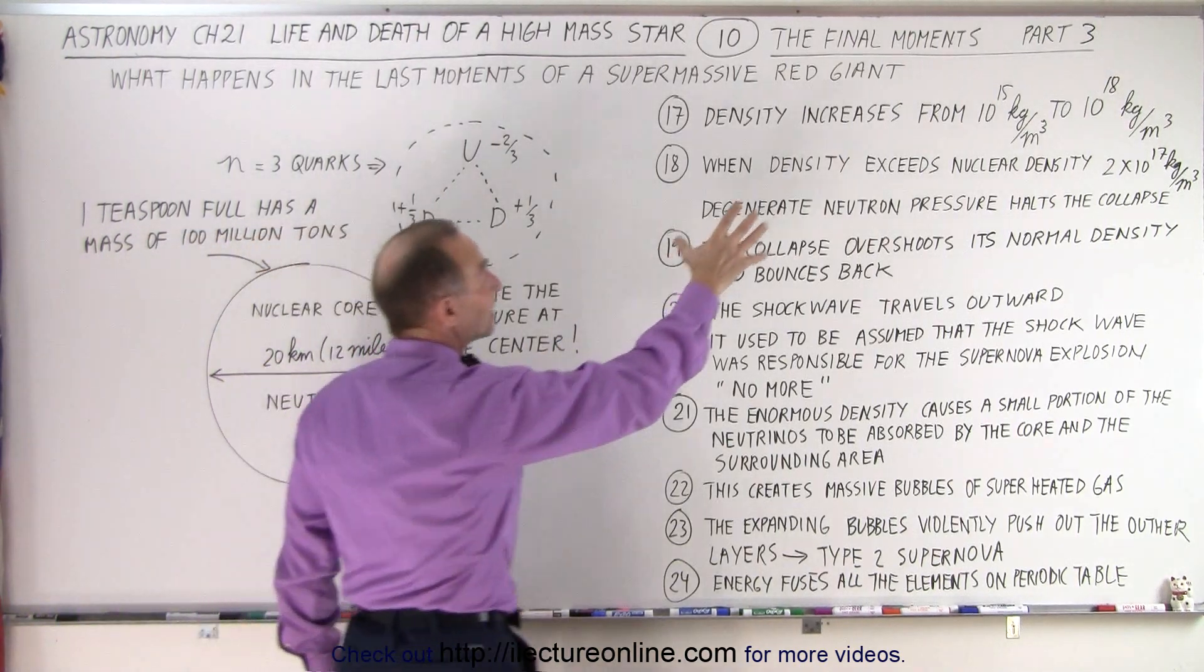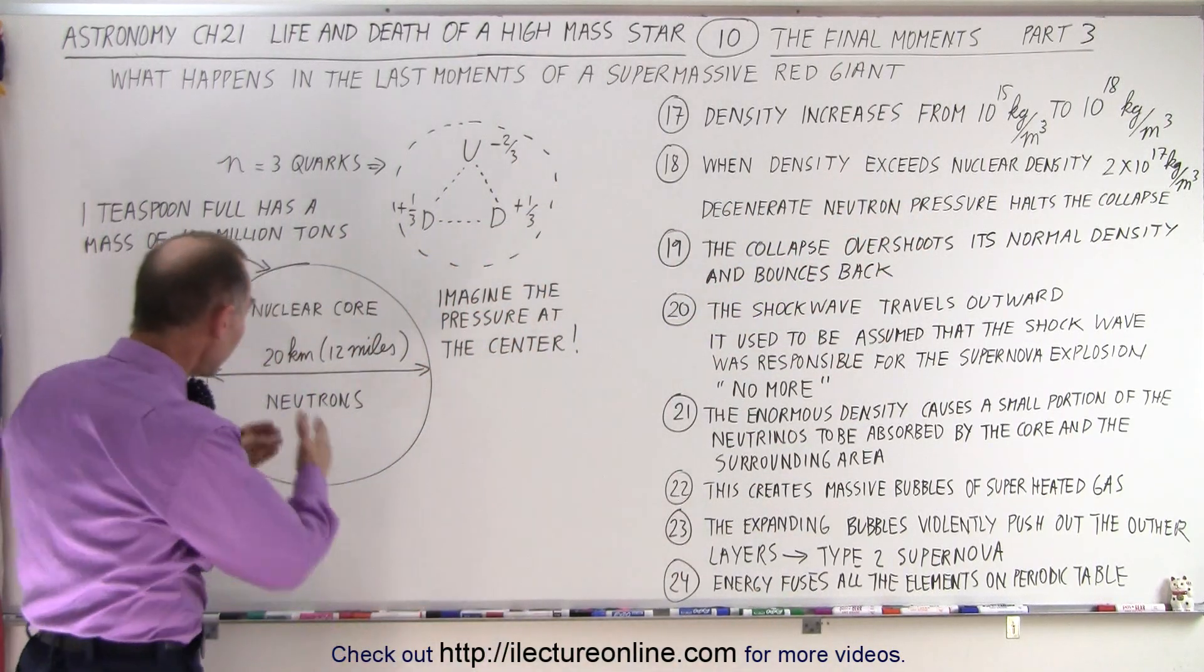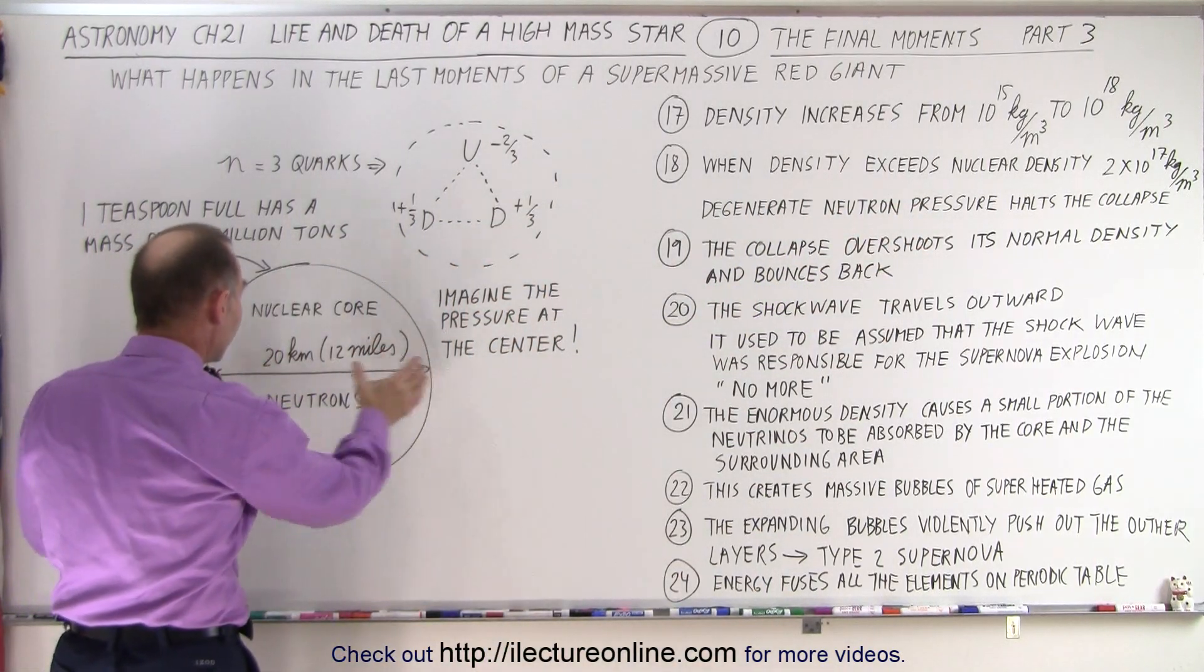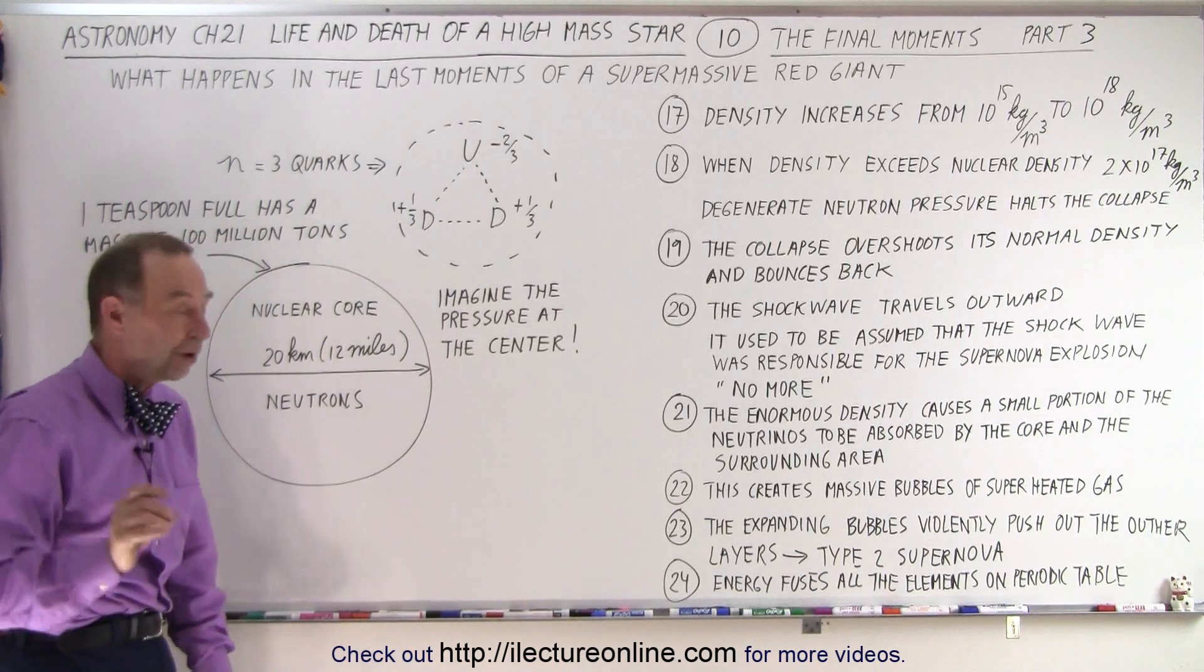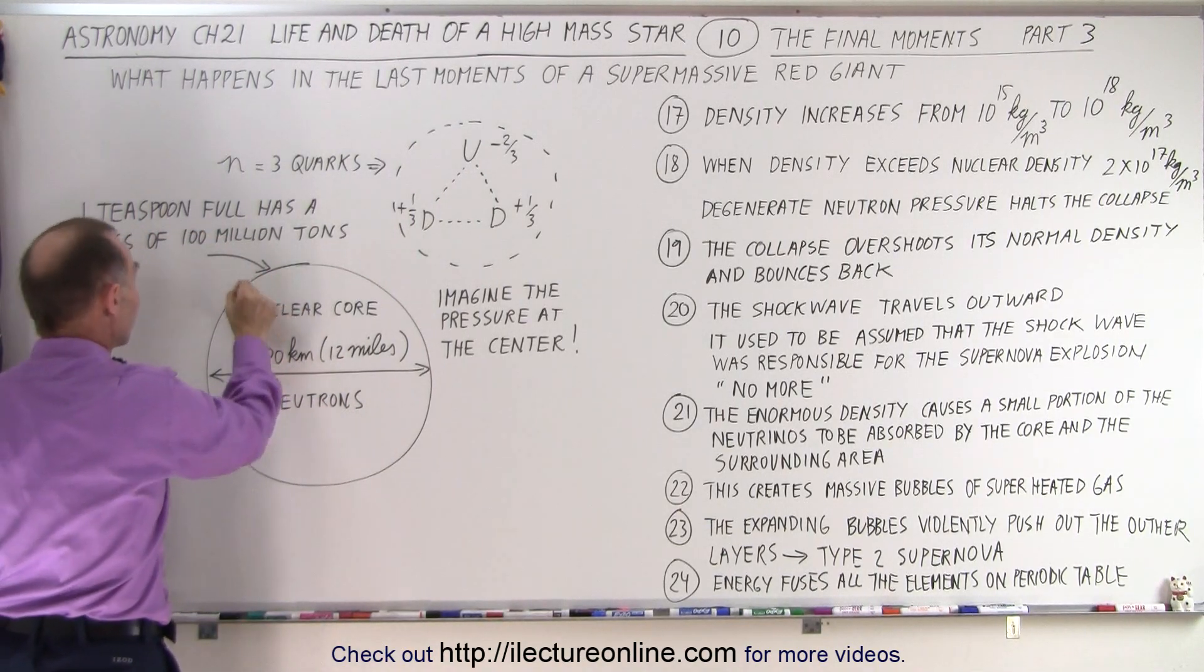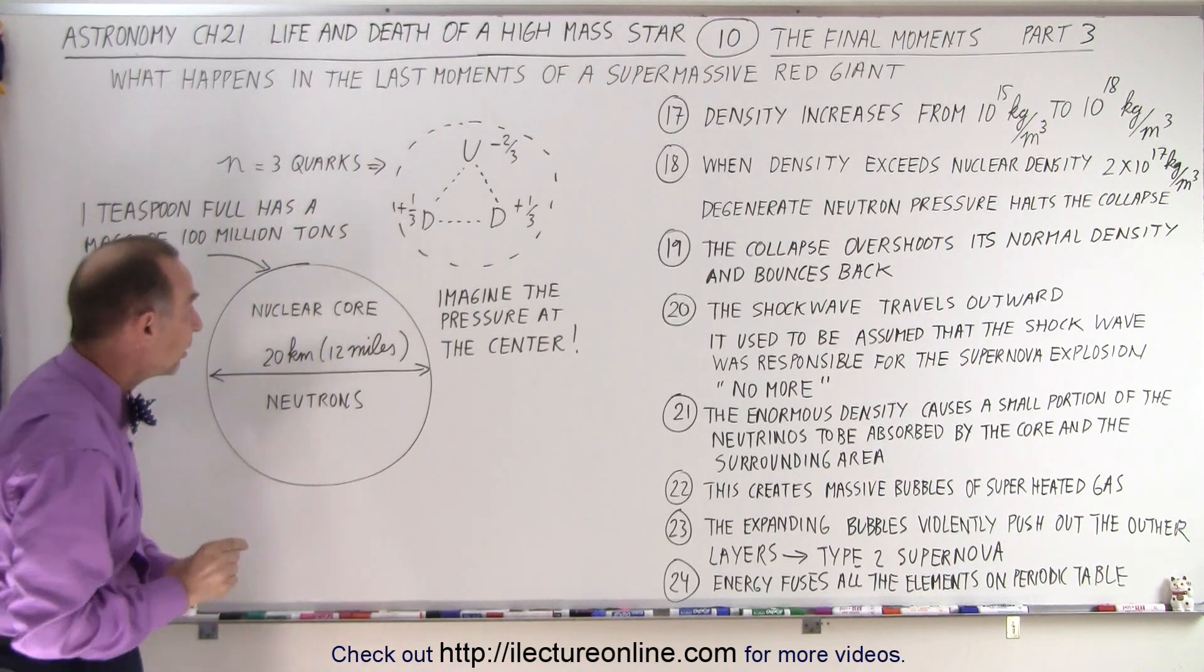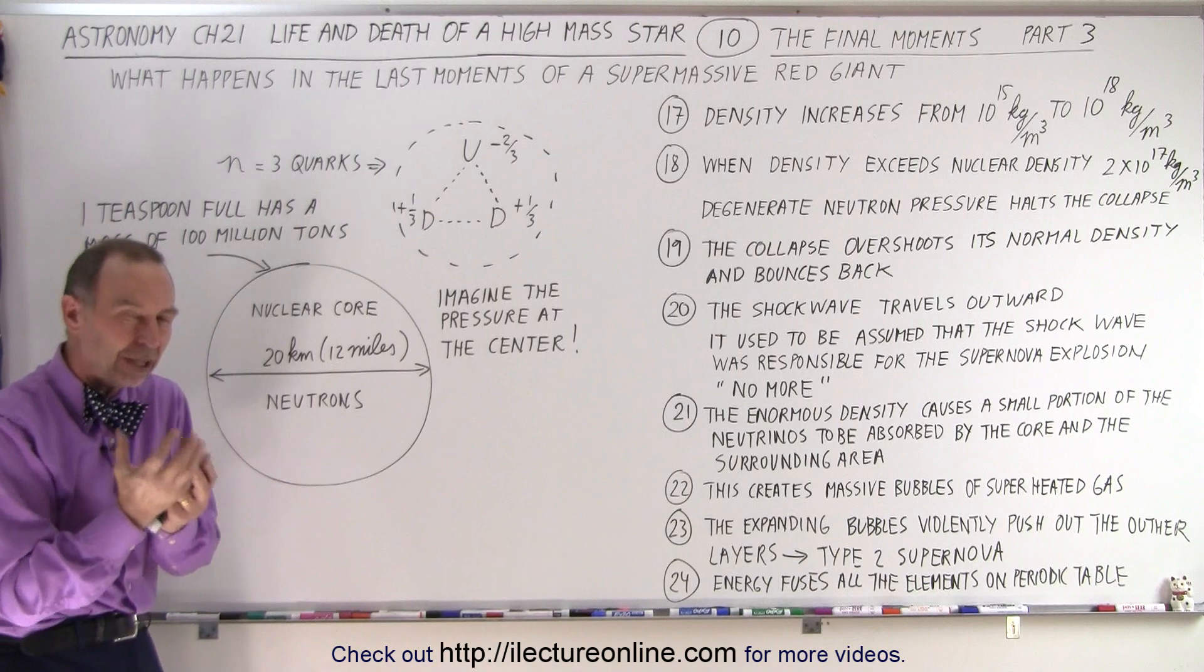Now, at the time that the density has increased to the density of a nuclear ball, the core has a diameter of about 20 kilometers, about 12 miles. A single teaspoonful of this nuclear material has a mass of 100 million tons.